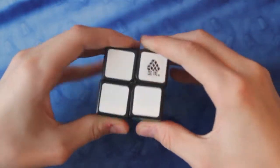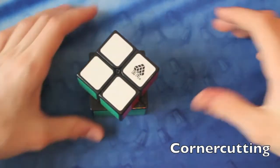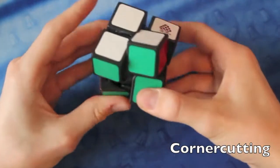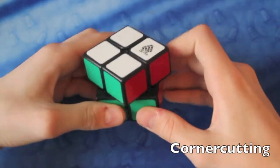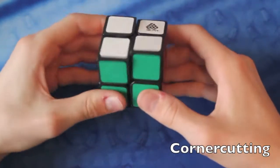Gut, dann kommen wir jetzt mal zu dem Corner Cutting. Das Corner Cutting bei dem Würfel ist sehr gut, und 75 Grad schafft er locker eigentlich. Meistens.